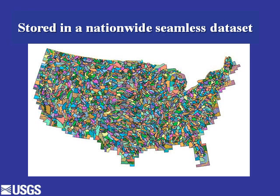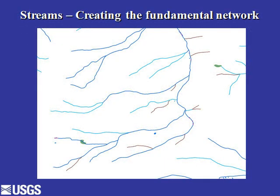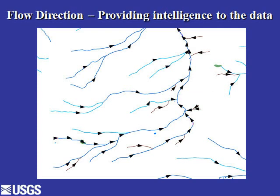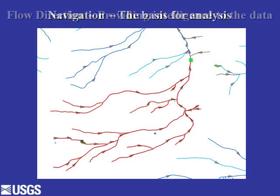There are 2,256 hydrologic units at the fourth level of hierarchy over the United States, here shown for the conterminous United States. The National Hydrography Dataset is one nationwide seamless dataset — although composed of many units, it's one continuous seamless dataset for the country. In the NHD we know information about streams: for example, this is Swan Creek; some streams are perennial, some intermittent, and some ephemeral. We also know the flow direction of all streams in the entire seven and a half million mile flow network.